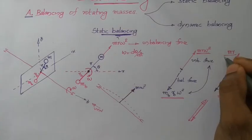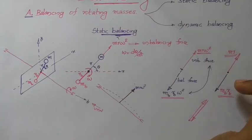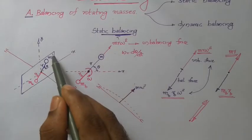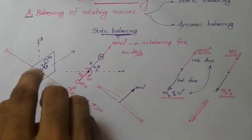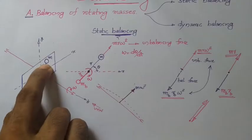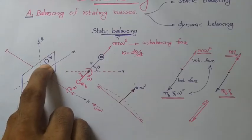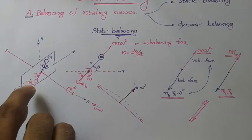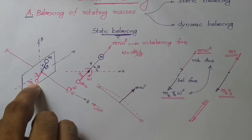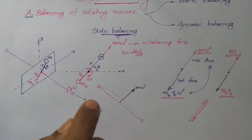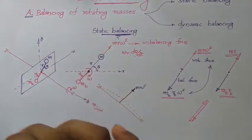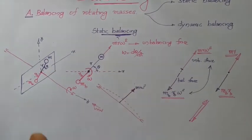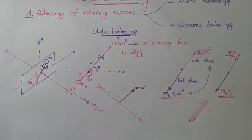So this is static balancing: the product of balancing mass mb and its radial distance rb equals the product of the unbalanced mass M and its radial distance r. In practice there will be several masses rotating in the same plane, and we will look at how to balance those cases. This has been an introduction to the concept of balancing. Thank you.